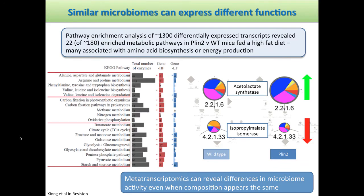We can subject these 1,300 differentially expressed transcripts to gene set enrichment analysis or pathway enrichment analysis. We identified 22 out of 180 metabolic pathways enriched for differentially expressed transcripts between the PLIN2 and wild-type mice fed a high-fat diet. Remember, these are two groups of mice fed the same diet that didn't exhibit any differences in taxonomic composition — but when we look at the functions, they're actually expressing different pathways. The PLIN2 knockout is causing an accumulation of triglycerides in the gut, somehow impacting metabolic pathways associated with amino acid biosynthesis, energy metabolism, and causing redirections in the flux of the pathways to account for this additional quantity of triglycerides.